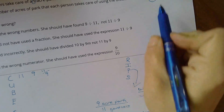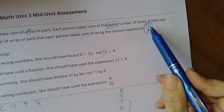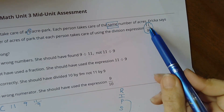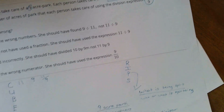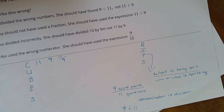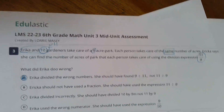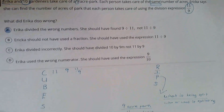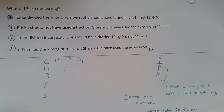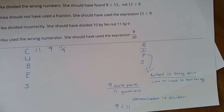I could tell right here that the difference was my fraction. She was taking the people and dividing by the acres. Really, we need to take the acres and divide by the gardeners. So my answer is A, and I approved my answer. That is number 3.